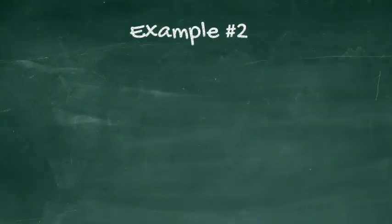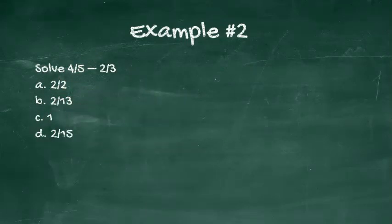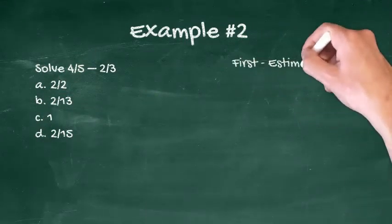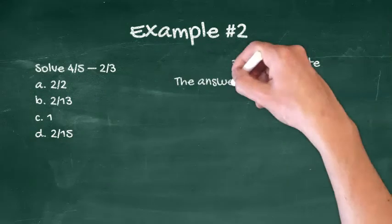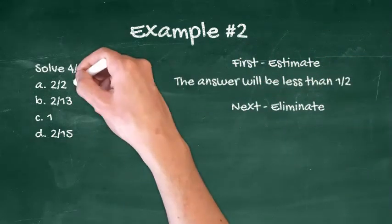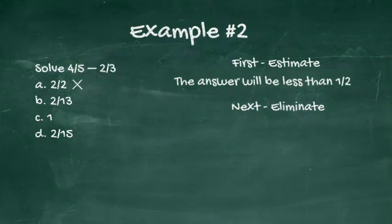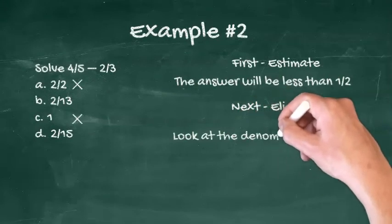Let's look at another example. Solve four-fifths minus two-thirds. First, quickly estimate the answer. Four-fifths is very close to one and two-thirds is more than half, so the answer is going to be less than one-half. Choice A can be eliminated right away because it is one. Choice C can be eliminated for the same reason.